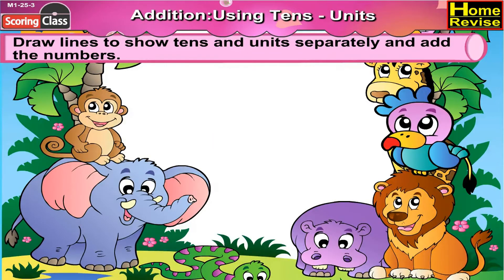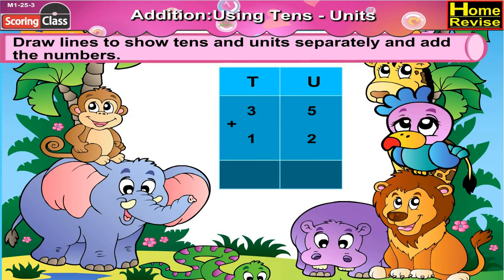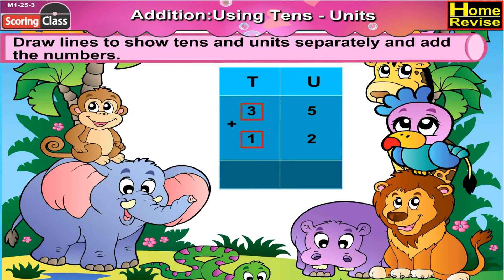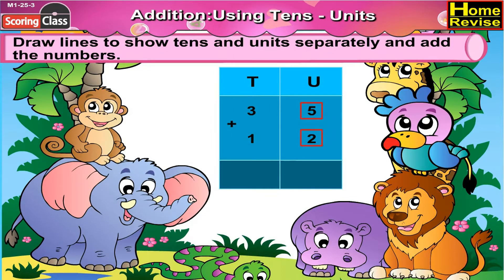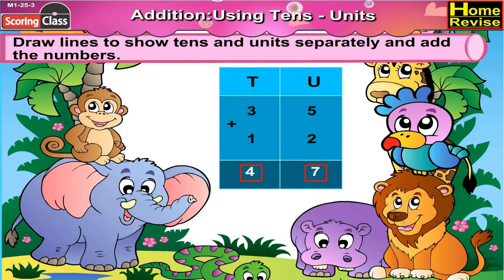Next is 35 plus 12. We will draw a line between 35 and 12. Write units above 5 and 2, tenths above 3 and 1. 5 plus 2 is 7, 3 plus 1 is 4. So 35 plus 12 is 47.